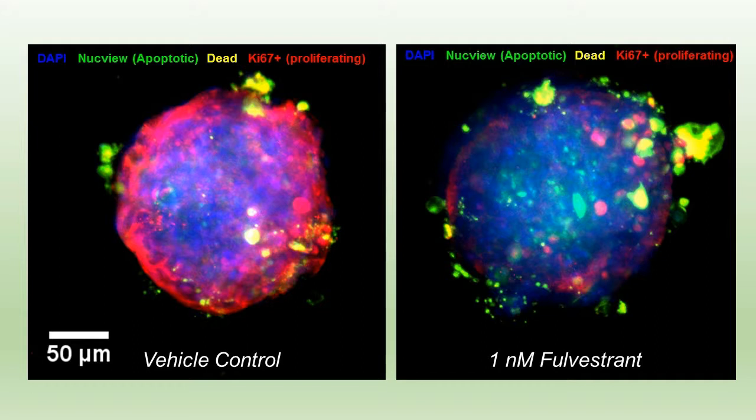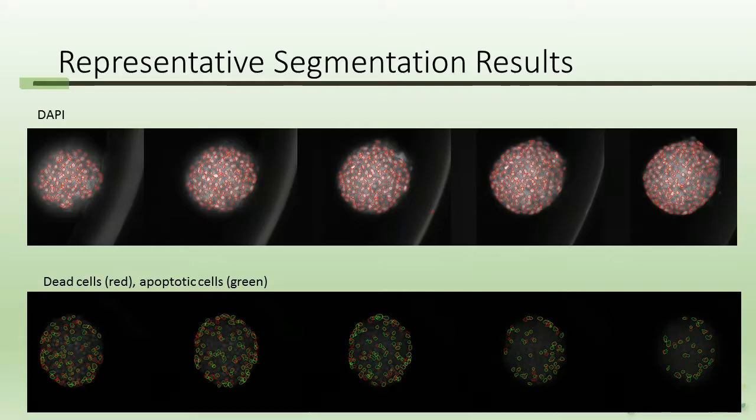What you see between the vehicle control on the left and one nanomolar of Fulverstrand on the right is that Fulverstrand affects cell preparation in these 3D cell culture models, which can clearly be seen from the Z-projection image collected using high-content confocal microscopy. On this slide, I'm showing a representative segmentation result from DAPI and then dead cells, which are red, and apoptotic cells, which are green.